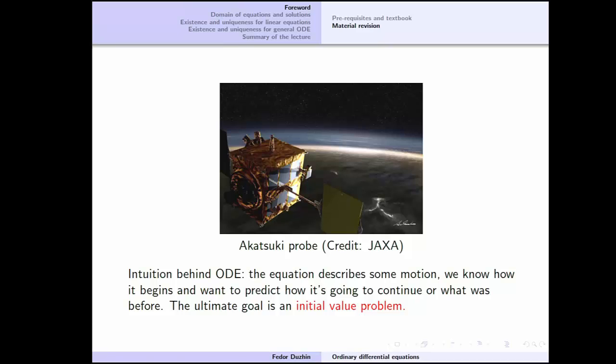Maybe I want to tell you the story about this probe that you see in the picture. This is the Akatsuki probe. It was sent to Venus, and unfortunately when it approached Venus, the main engine broke and it couldn't enter the Venus orbit. It just flew away to space.